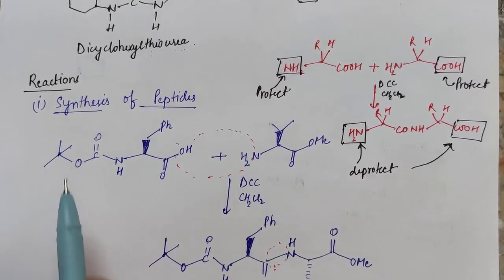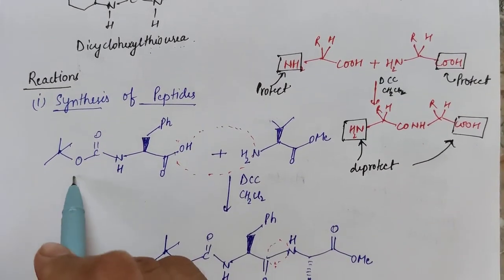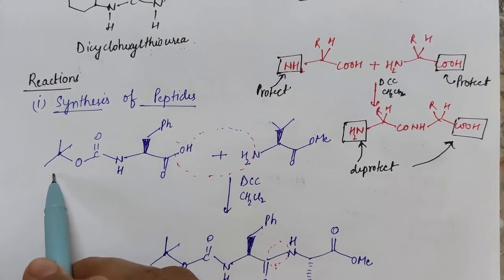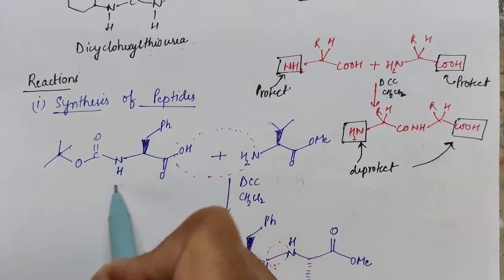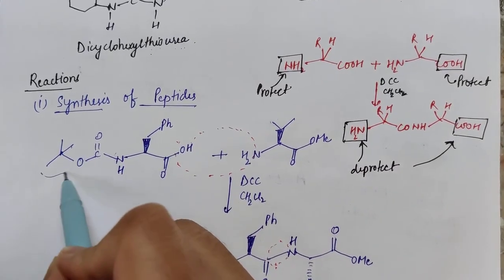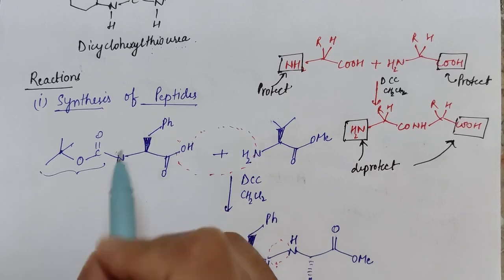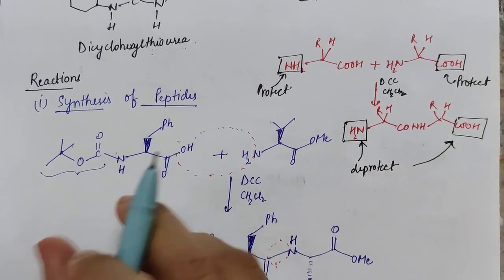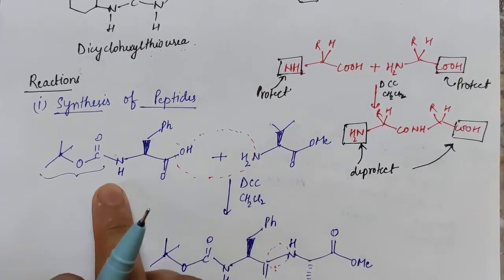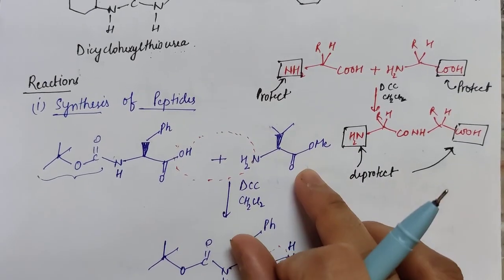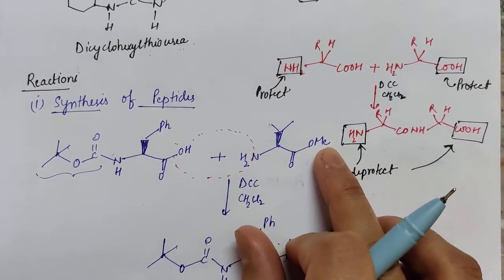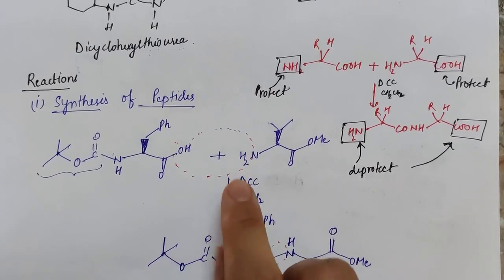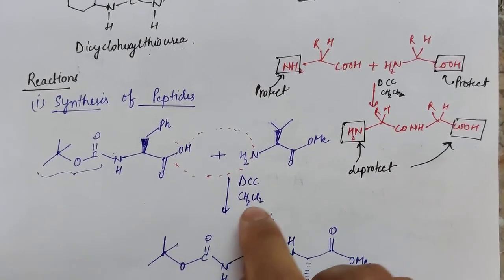In peptide synthesis using DCC, the NH2 side of the first amino acid is protected so it does not participate in peptide bond formation. For the second amino acid, the carboxylic group is protected. After protecting these two groups, the mixture is treated with DCC in dichloromethane.